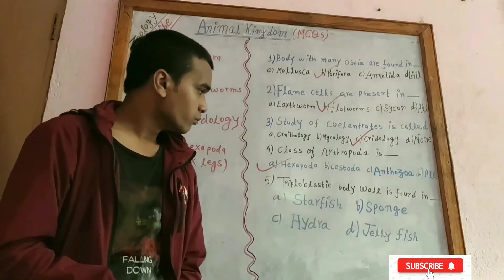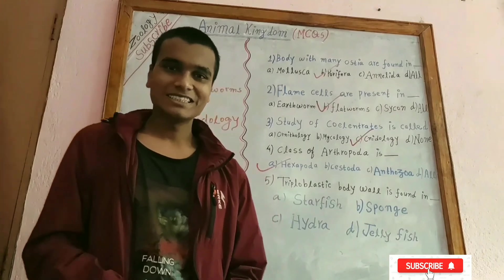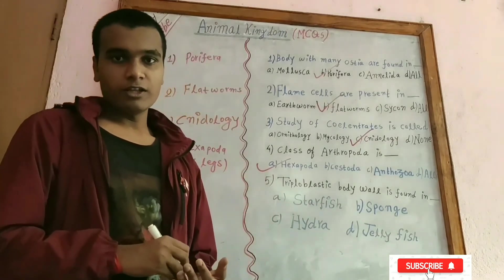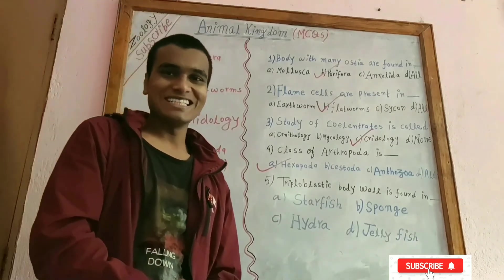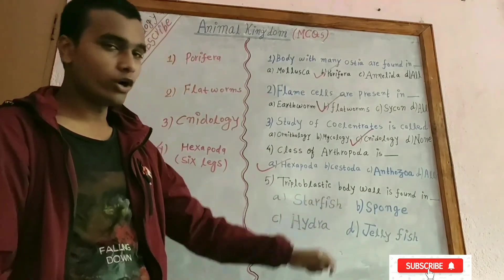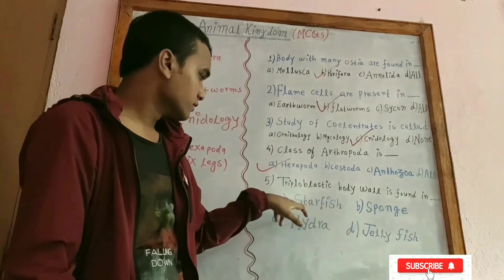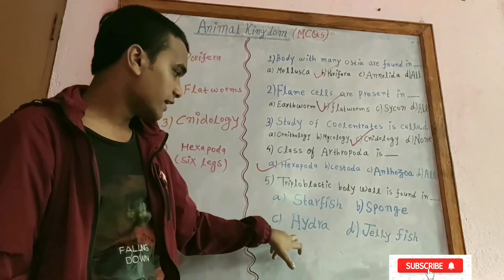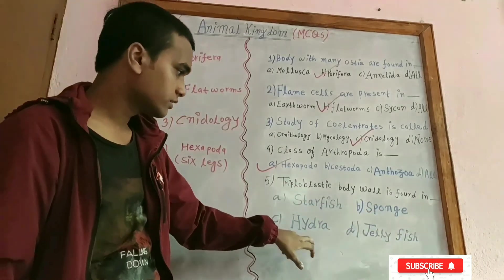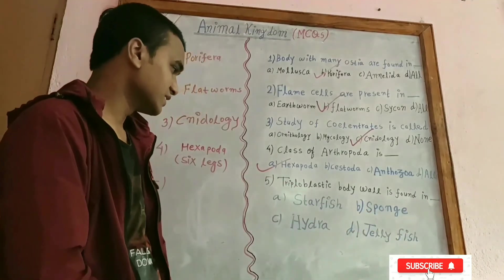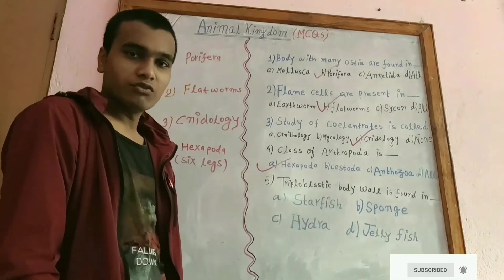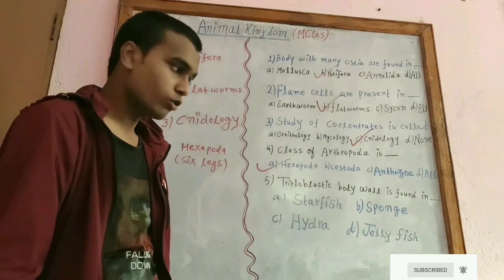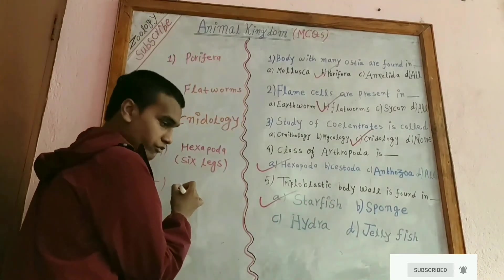Triploblastic body wall is found in which phylum? Porifera and Cnidaria contain diploblastic body walls. Starfish belongs to Echinodermata, sponge belongs to Porifera, Hydra belongs to Cnidaria, and jellyfish also belongs to Cnidaria. Therefore, phylum Echinodermata contains a triploblastic body wall — the answer is starfish.